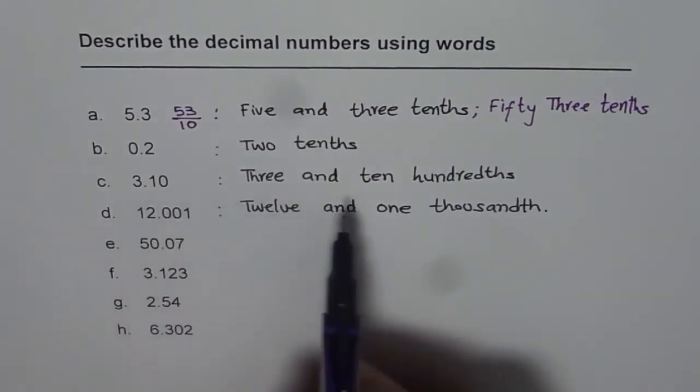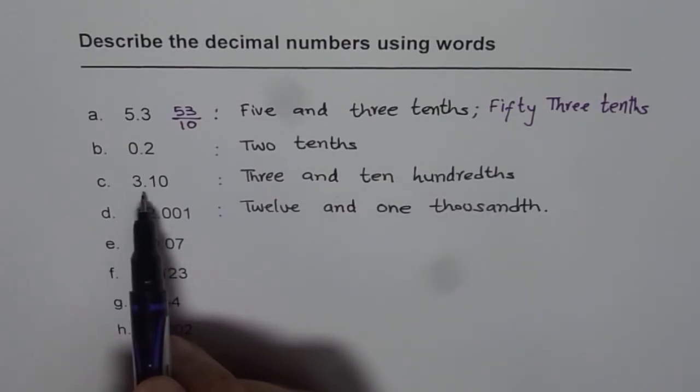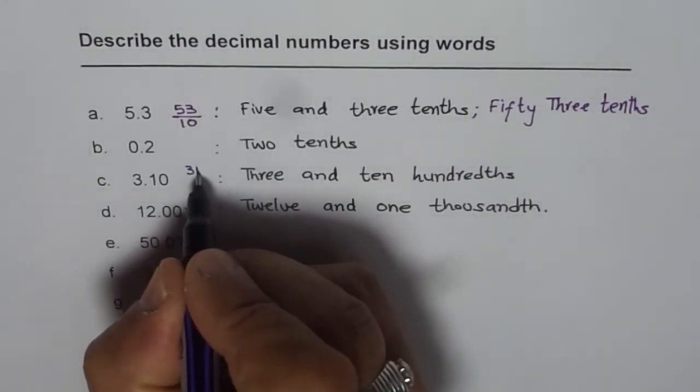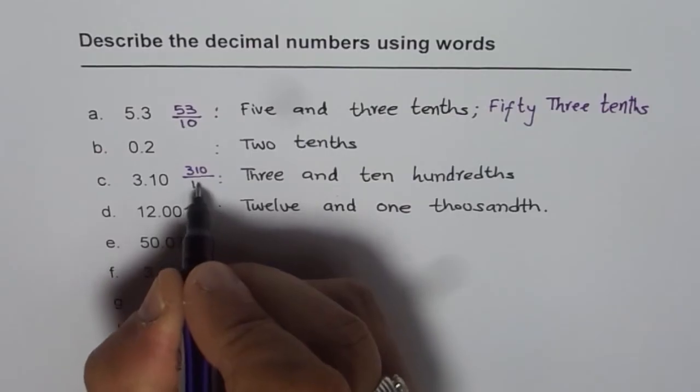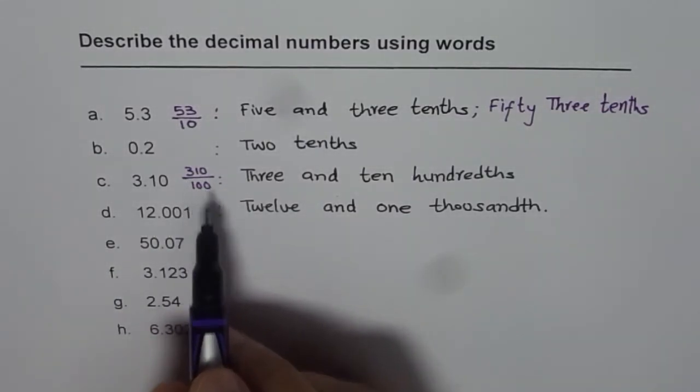This is 3 and 10 hundredths. I could write this as 310 hundredths, right? So I can describe this as 310 over 100. So I can write this as 310 hundredths.